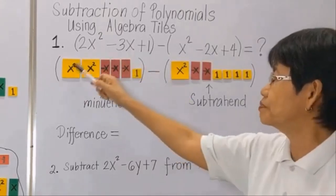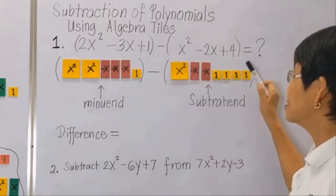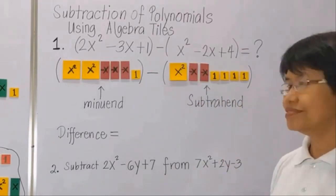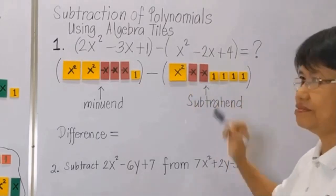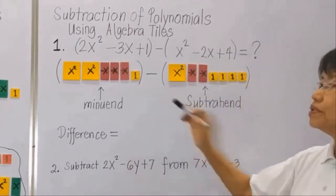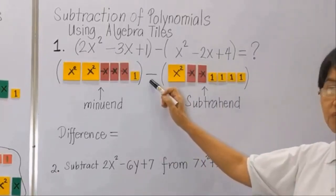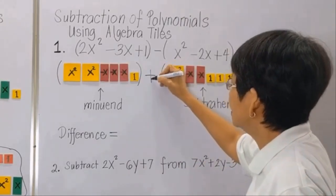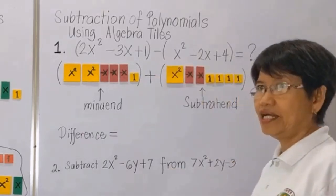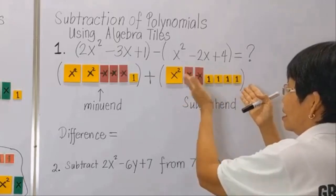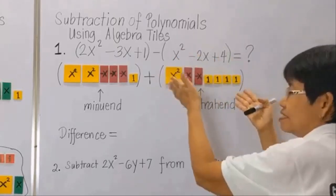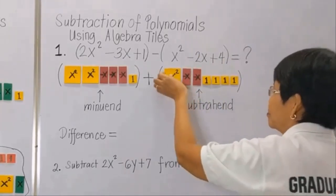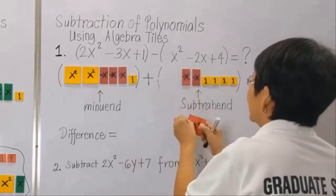The minuend is the first polynomial, and the subtrahend is the polynomial being subtracted from the minuend — it follows the negative sign. The rule is to change the sign of the subtrahend and proceed to ordinary addition. So here we change the sign of the subtrahend and proceed to ordinary addition. It follows that the signs of these symbols should also be changed, so x squared will become negative x squared.